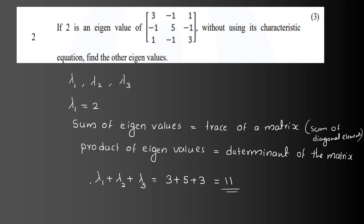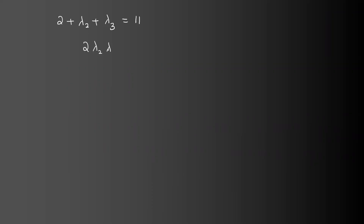The product of eigenvalues — lambda 1 times lambda 2 times lambda 3 — is equal to the determinant of the matrix, which equals 36. So we have: 2 plus lambda 2 plus lambda 3 equals 11, and 2 times lambda 2 times lambda 3 equals 36.